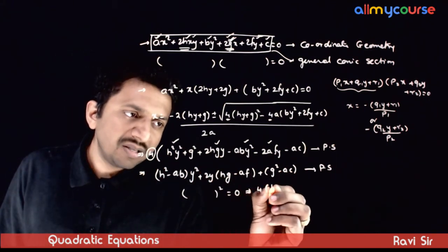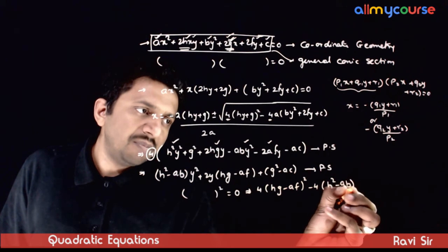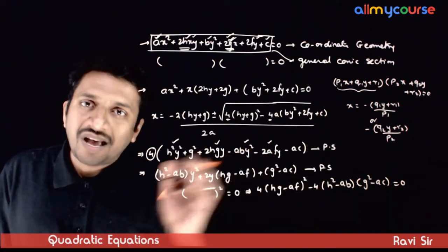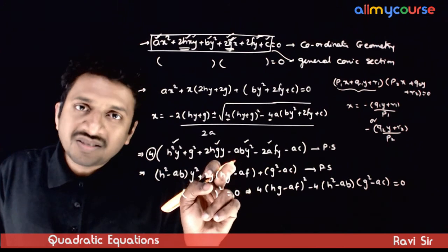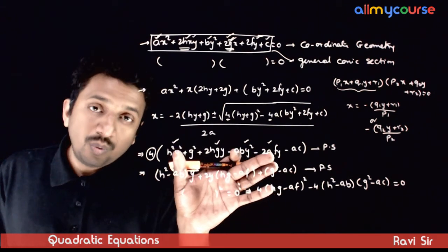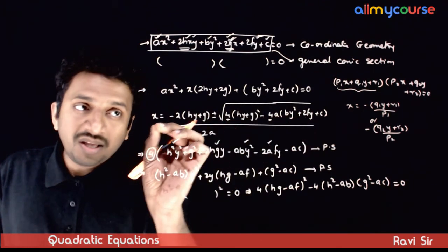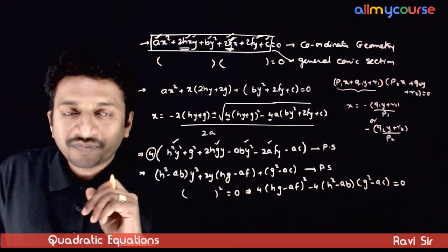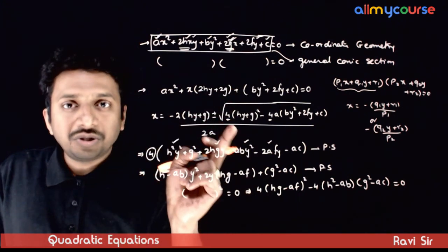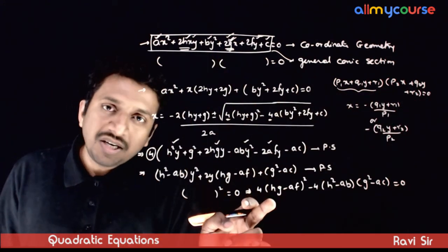The discriminant condition is: 4(hg − af)² − 4(h² − ab)(g² − ac) = 0. This is the final condition, which ensures the discriminant equals zero, which in turn ensures the expression is a perfect square, which ensures the square root cancels, which ensures x will be a rational function of y — giving a linear factorization for the original expression.